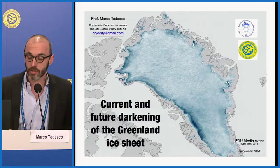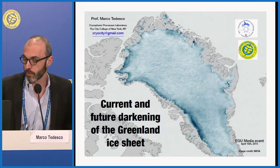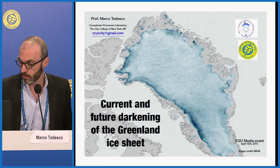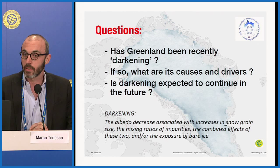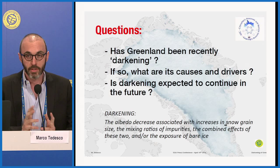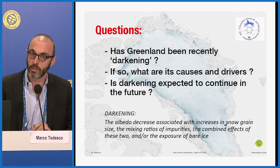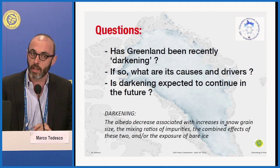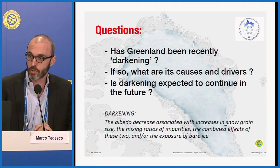Good afternoon. My name is Marco Tedesco. I'm with the City College of New York. I'm going to talk briefly about the darkening of the Greenland ice sheet. The questions we were trying to ask are: has Greenland been darkening recently? What are the causes and drivers? And is darkening expected to continue in the future? Darkening recently received a lot of attention about the deposition of soot and black carbon on the ice sheet, but we really think about darkening with a revised definition — there are processes that happen when snow melts and refreezes that cause albedo to decrease.